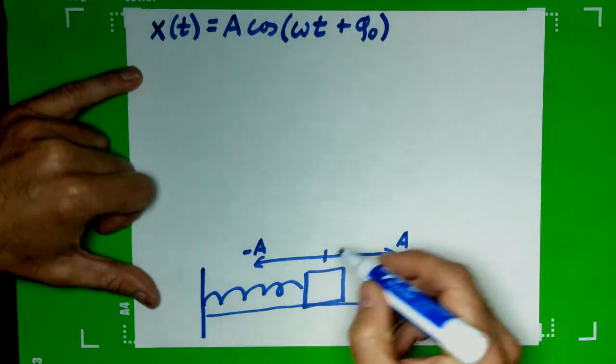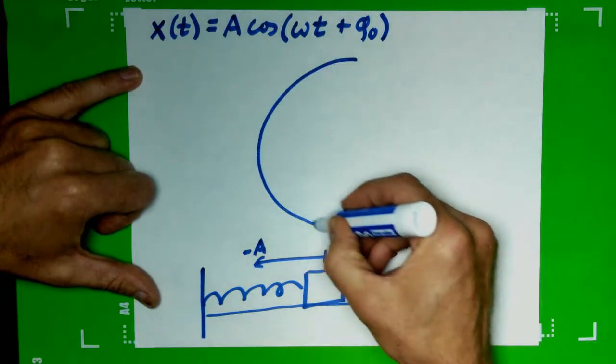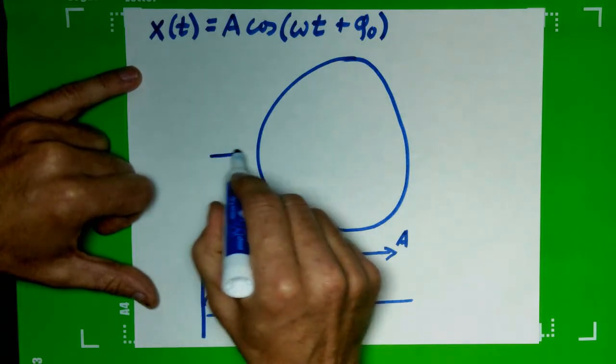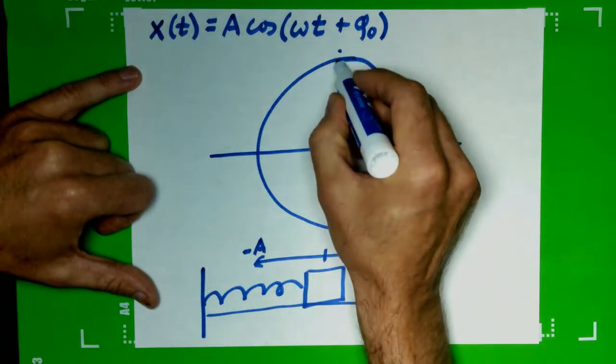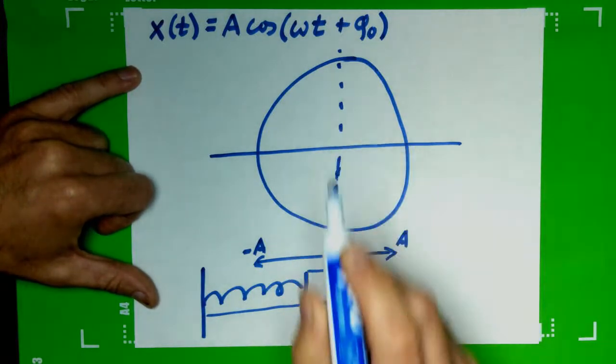Okay, so let's draw a circle that has the same diameter - that was a bad circle, forgive me - that's got the same diameter as our total displacement from minimum to maximum.